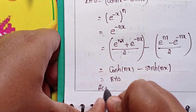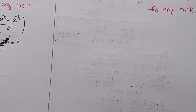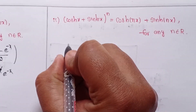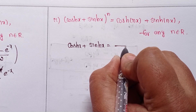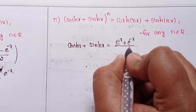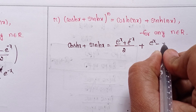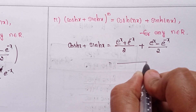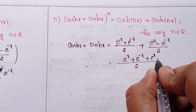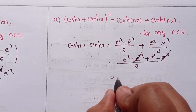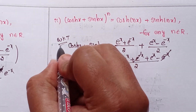Next, the second one follows the same pattern. We know that cosh(x) + sinh(x) equals cosh(x) value, (e^x + e^(-x))/2, plus sinh(x) value, (e^x - e^(-x))/2. Taking LCM of 2: e^x + e^(-x) plus e^x minus e^(-x). These terms cancel, leaving 2e^x by 2. The 2 also cancels, so e^x is the value of cosh(x) + sinh(x).